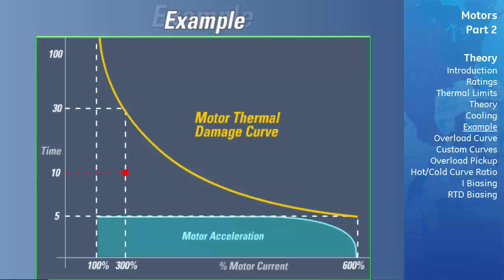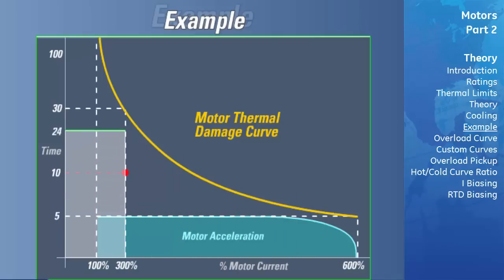This can be represented visually by moving the area of 4 seconds at 600% current into the area of 30 seconds at 300% current. When the motor's current draw dropped to 300%, the relay could allow the motor to continue for an additional 6 seconds before the thermal capacity used reached 100%, at which time the relay had to trip the motor. This is why the relay issued a trip command 10 seconds after the motor started, even though the motor's current draw never exceeded the thermal damage curve limits. In effect, the relay is calculating the integral of the load current.